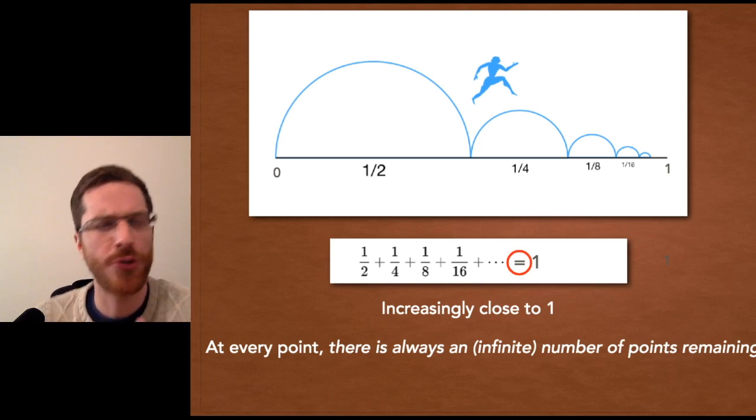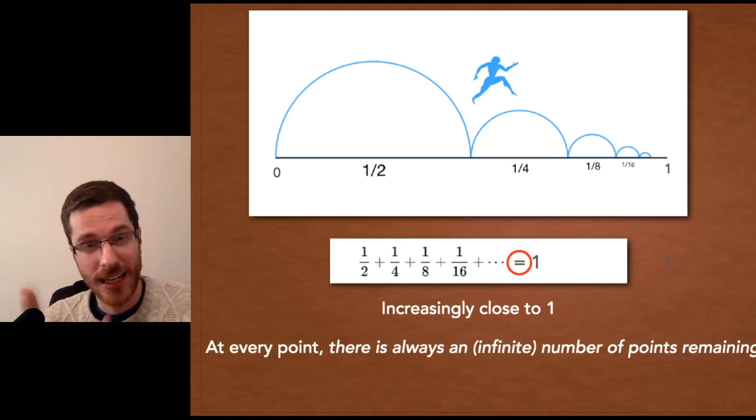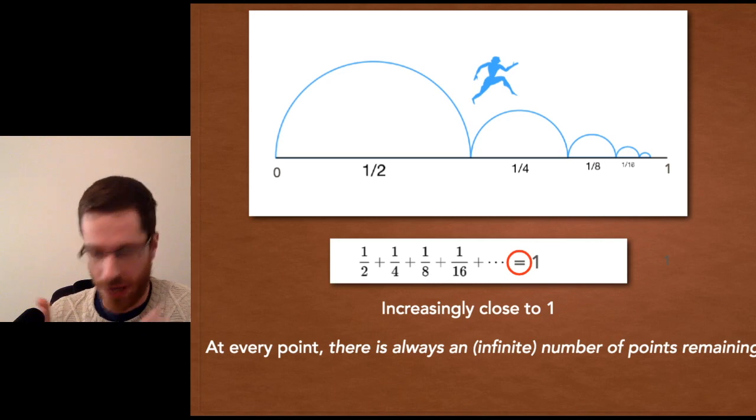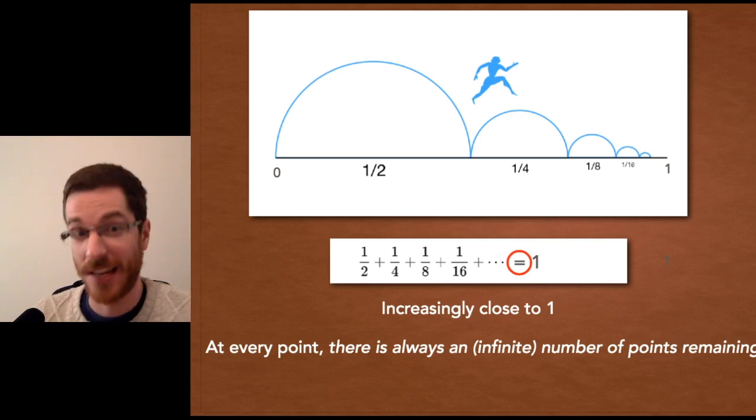So even if he's one one trillionth of the way to getting to that final destination, if space is infinitely divisible, then, well, he's still got a myriad of infinities to cross. And in fact, there's an even further logical problem.